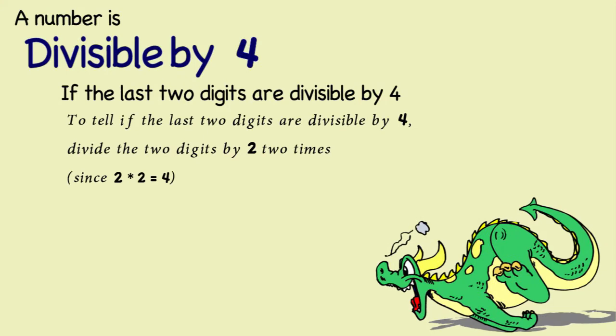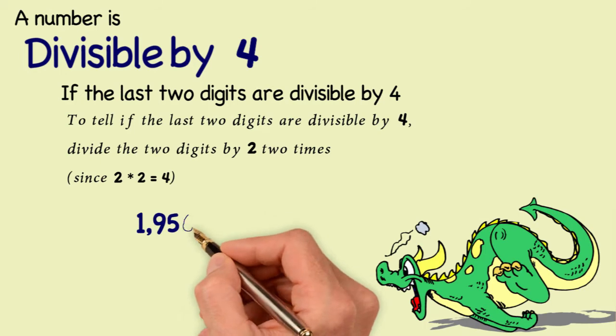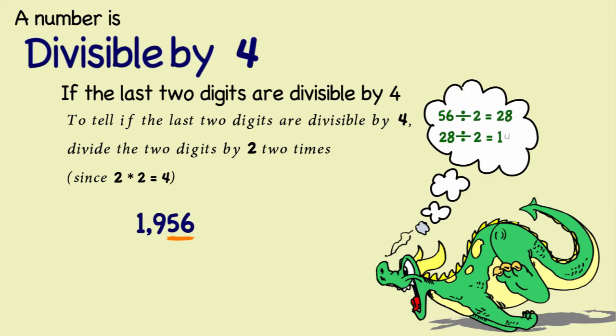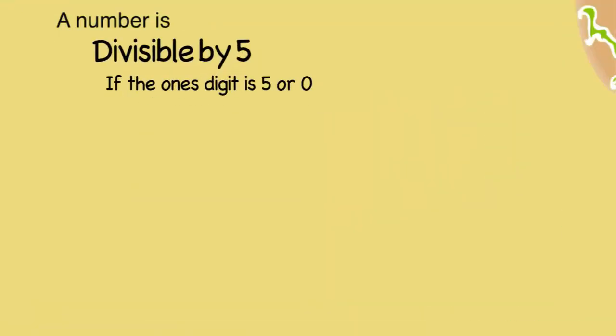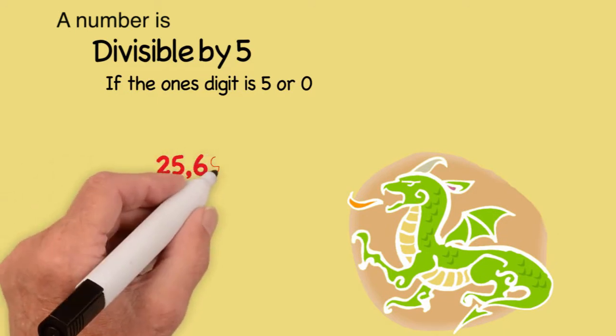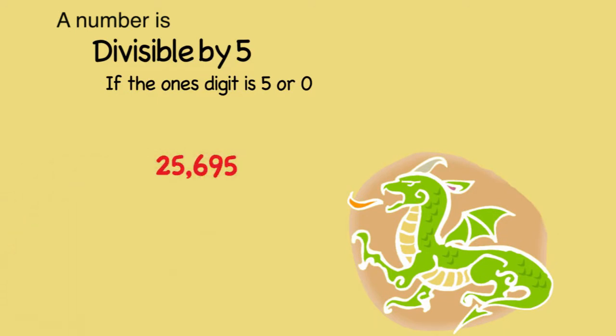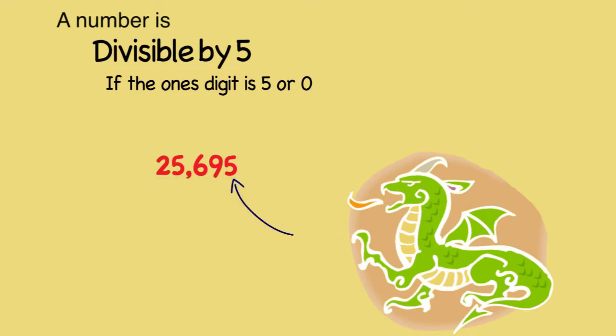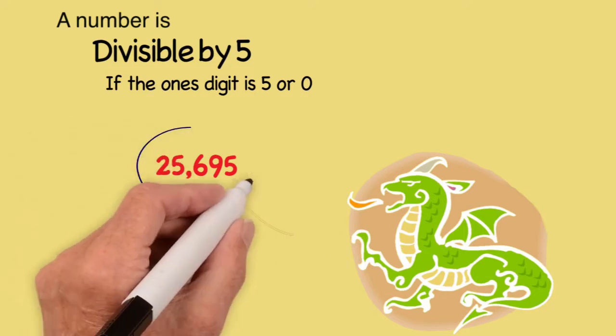Now we move on to 4. Our example number for 4 is 1,956. The rule for 4 is, are the last two digits divisible by 4? And 56 is divisible by 4. That's how we know 1,956 is divisible by 4. Next up, we have 5, and our example number is 25,695, which you can easily tell is divisible by 5 because the last digit is 5. And if the last digit is 5 or 0, the number is divisible by 5.